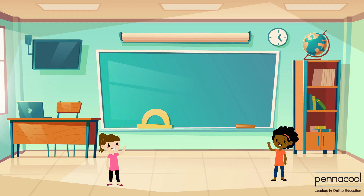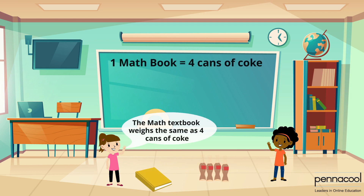Taylor is in class and tries to relate the weight of certain items to her friend Kayla. To do this, she has to use items which Kayla could identify with in terms of math. For example, Taylor notes that her math textbook has the same mass as four cans of Coke.